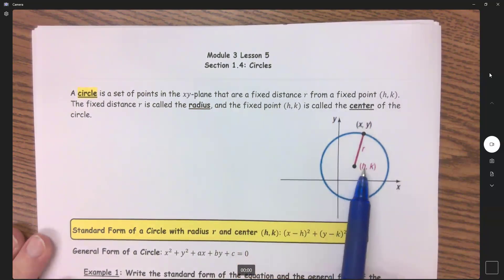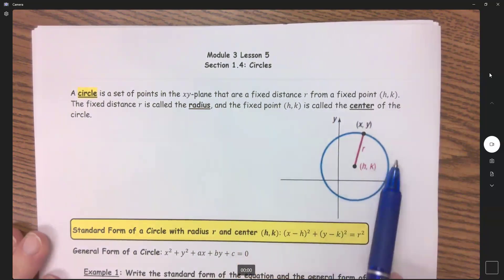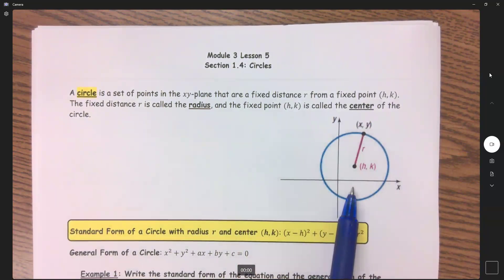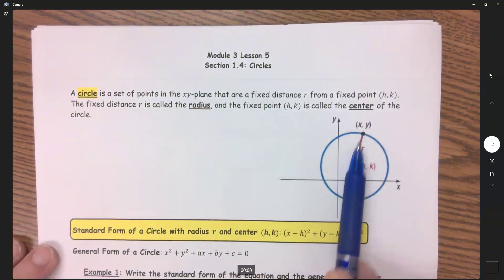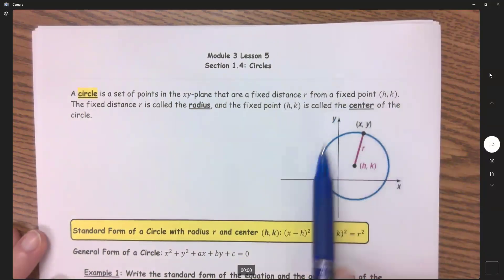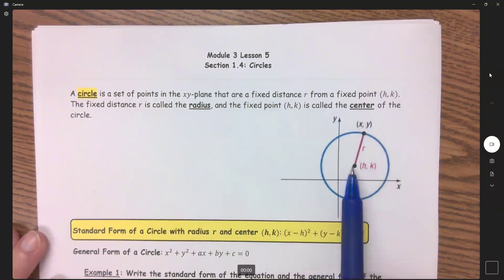You have your center, which is your h,k. Then you have your circle right here. And what makes a circle a circle is that this distance radius is a fixed point, or every point on the circle is equal distance from the center.